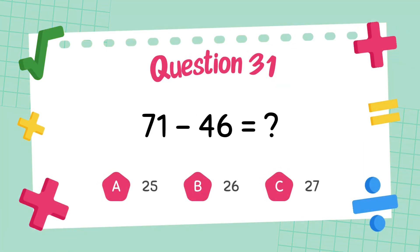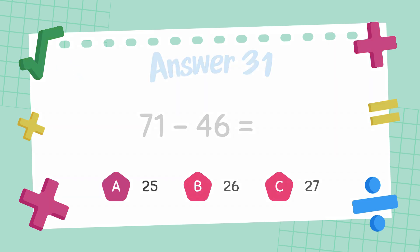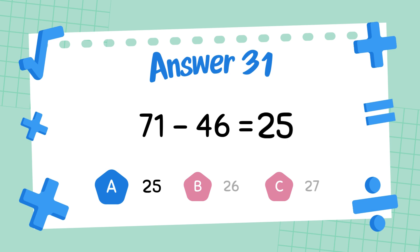What is seventy-one minus forty-six? The answer is twenty-five.